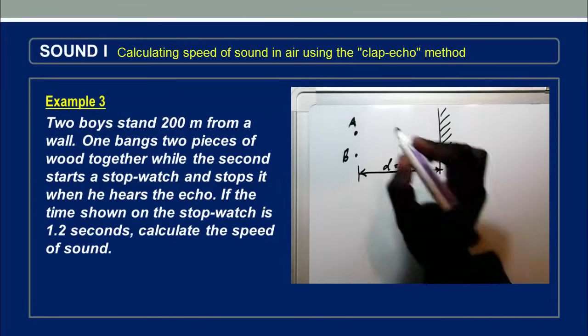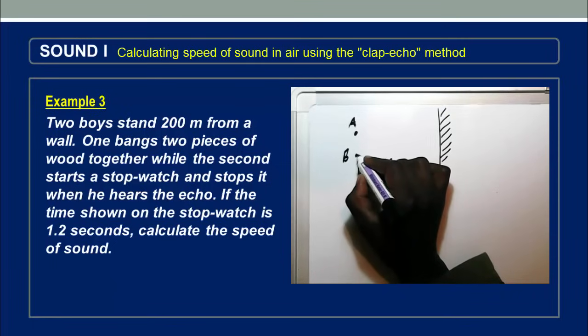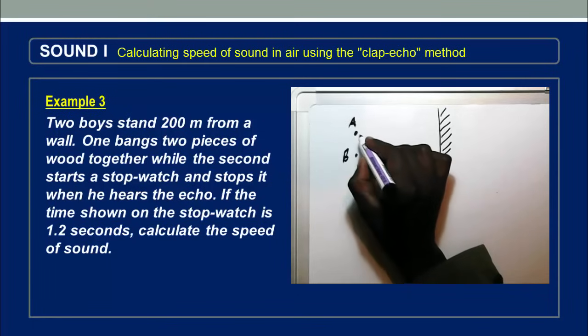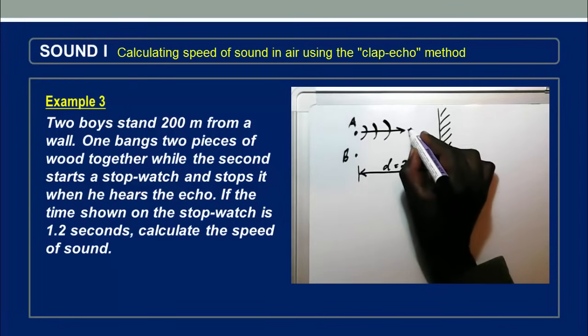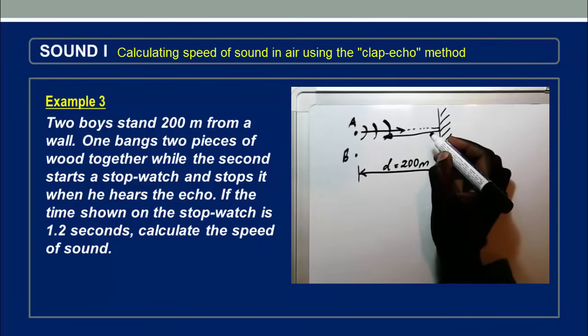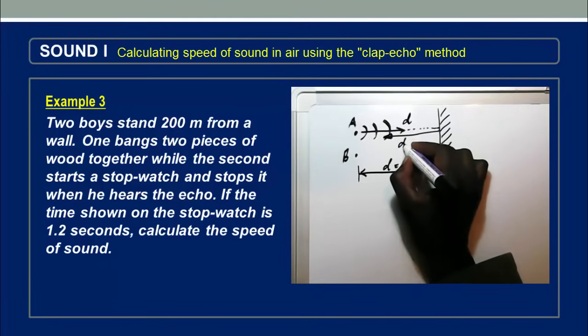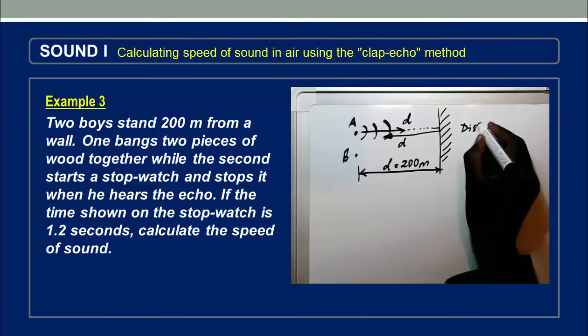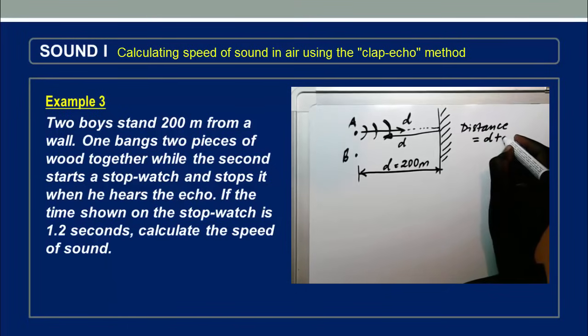Now let's assume it's the first boy, A, who bangs two pieces of wood together, and the second one is timing that motion. Now as soon as he bangs the two pieces of wood together, the sound which is produced travels in all directions. So let us consider the sound which is traveling in this direction. It will travel all the way, hit the wall, and then it is sent right back. So actually it covers a distance equal to D plus another D. So the total distance covered will be D plus D, and we can say that is 2D.